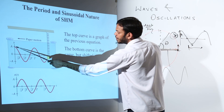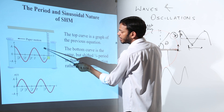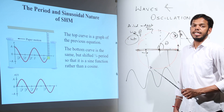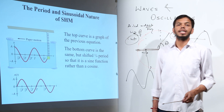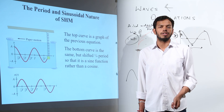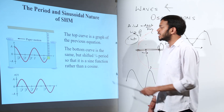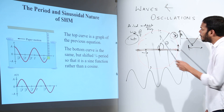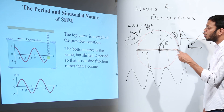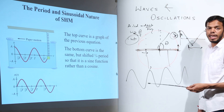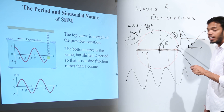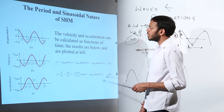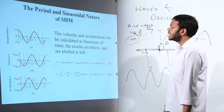This graph is similar to the sine graph but shifted by T/4 in terms of time period. So this cosine graph gets converted into a sine graph. SHM can be represented in both sine and cosine waves — it doesn't matter. If I start my particle from this point, the graph I get would be sine; from this point, it would be cosine.